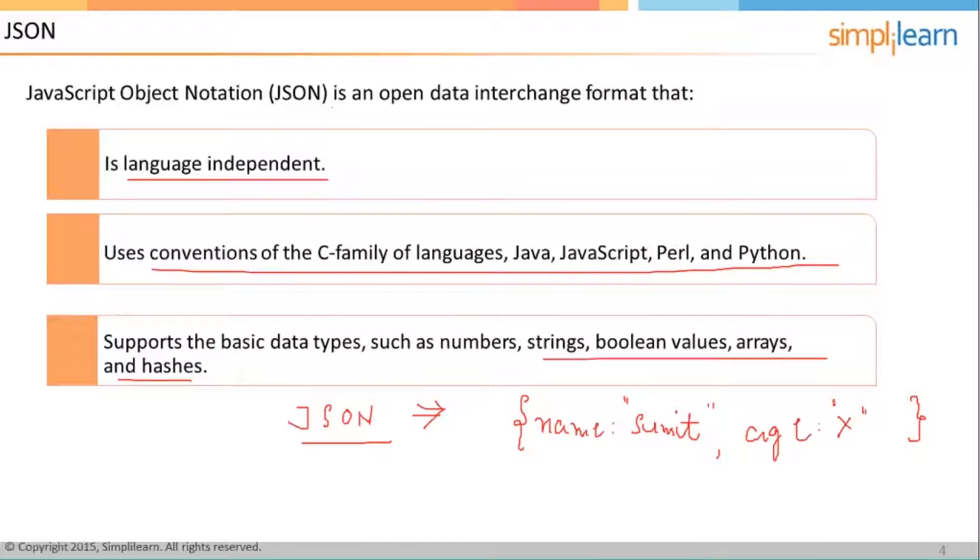So basically a JSON is nothing but an amalgamation of keys and values which together form a document, and this document will always be in the form of a JSON. And what you see in front of you is actually a JSON.